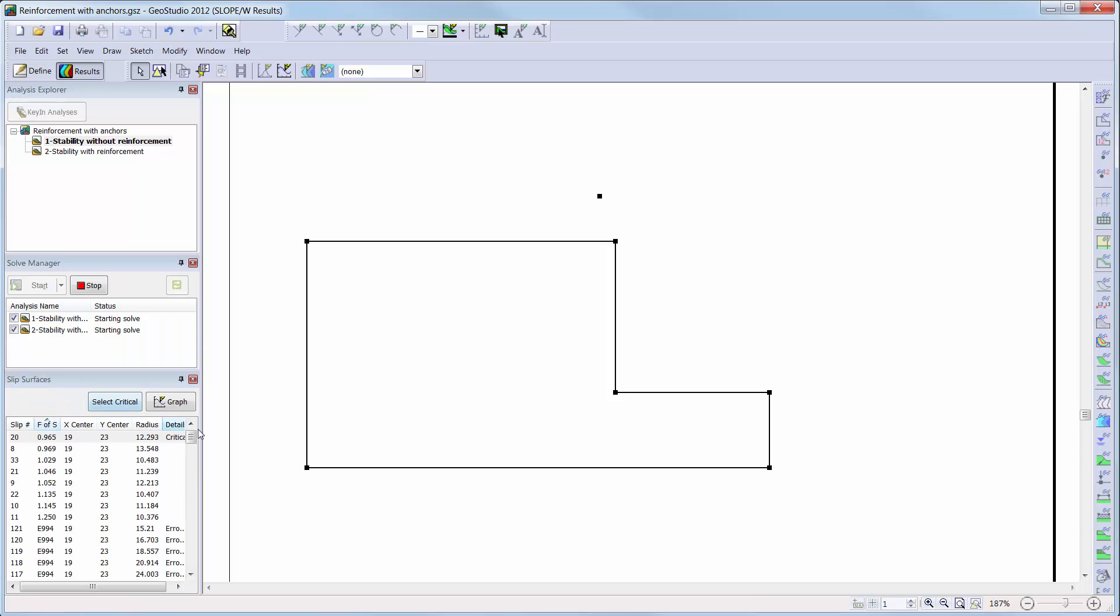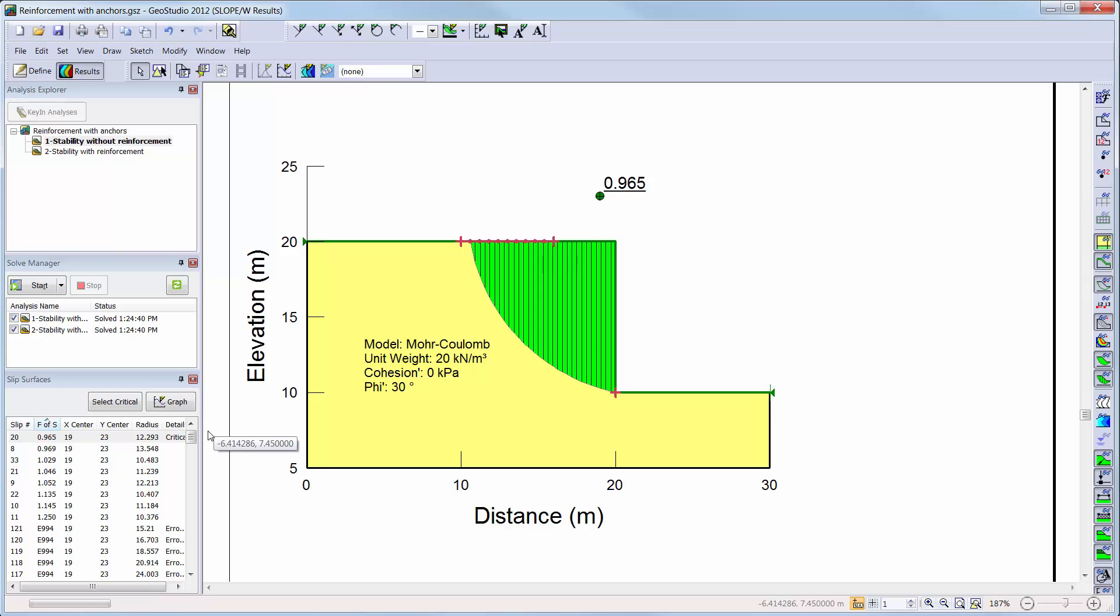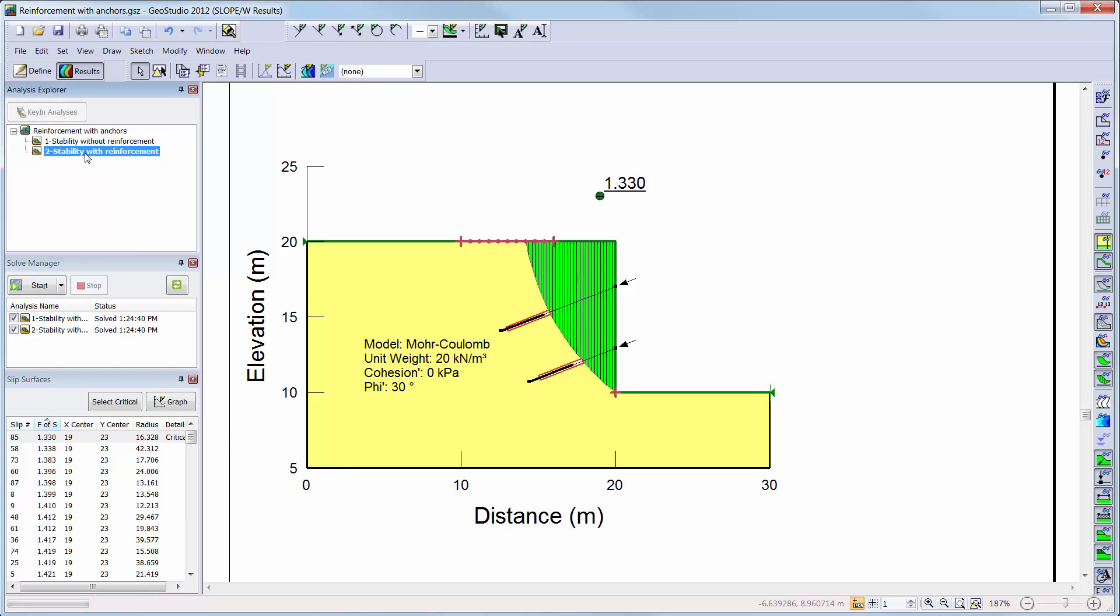Once solved, we can see that the factor of safety for the slope without reinforcement is 0.965. If we switch to the second analysis where we added the two anchors to the slope, we can see that the factor of safety has changed to 1.330 for the most critical slip surface.